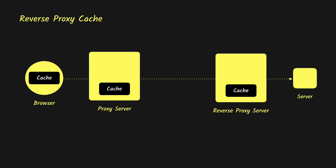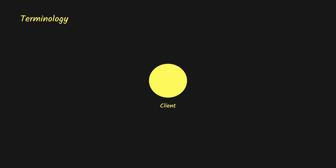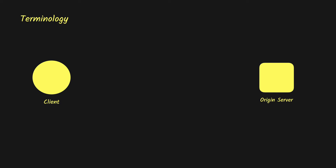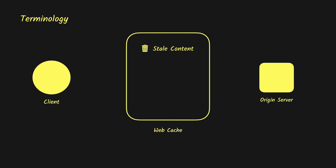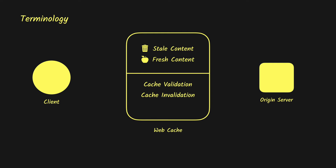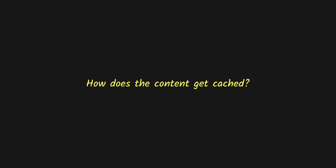Now that we know what caching is, its benefits, and the common places for caching, let's look at some terminology before we discuss the caching headers. First, we have the client — your browser or any application requesting the server for resources. Then we have the origin server, which is the source of truth. At any caching location we might have stale content, which is cached but expired, and fresh content, which is cached and still usable. We also have content validation — the process of contacting the server to check validity of cached content — and cache invalidation, which is the process of removing stale content from the cache.